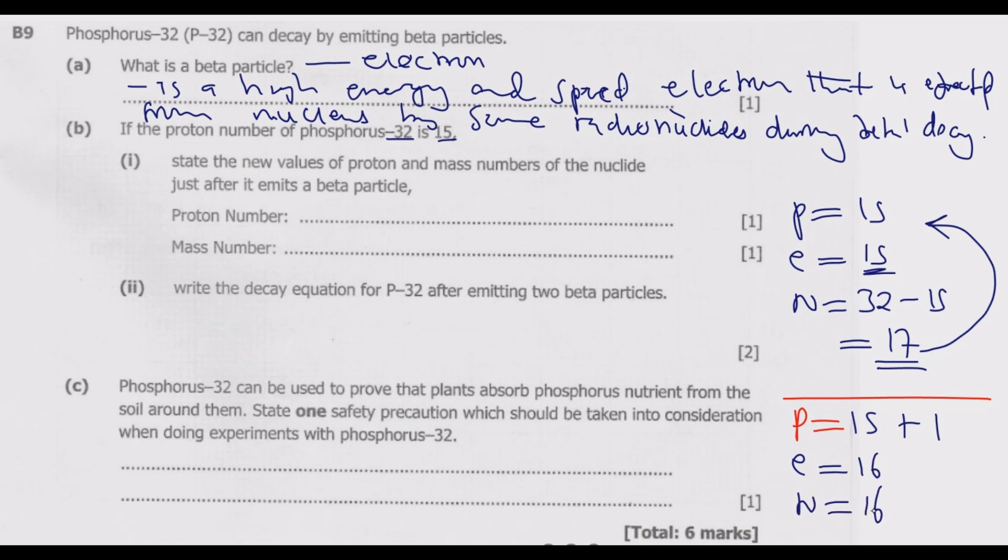The mass number of the system remains 32. So the proton number becomes 16 and the mass number remains unchanged at 32.